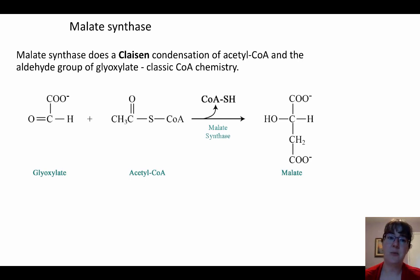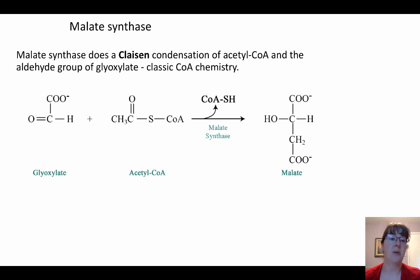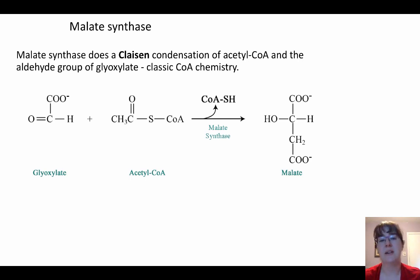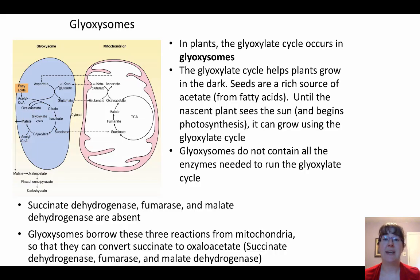The other enzyme is malate synthase. This performs a Claisen condensation of acetyl-CoA and the aldehyde group to get malate. We're essentially combining two two-carbon units with the help of acetyl-CoA. This involves classic CoA chemistry — if you're curious about the mechanism, look back at citrate synthase, because it's more of that same acetyl-CoA chemistry.